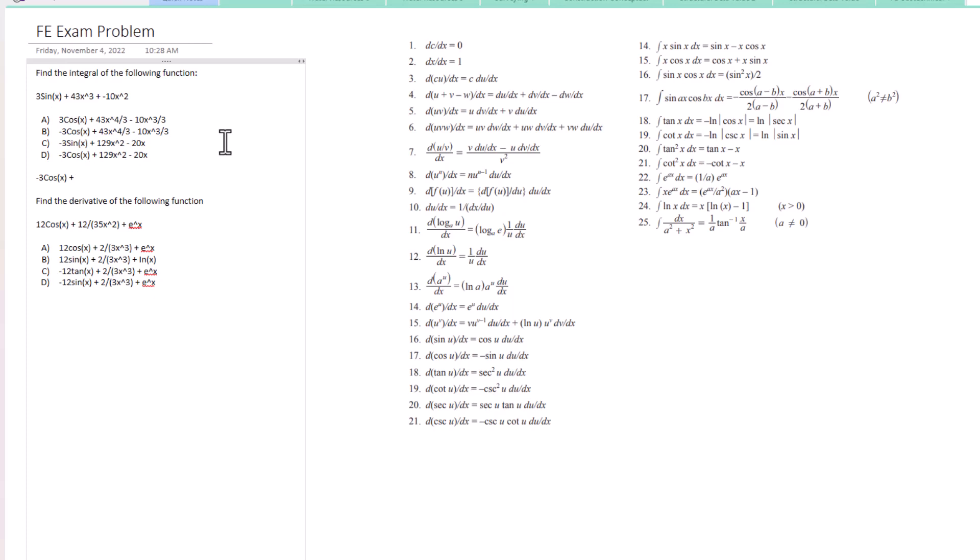For this next one, we're going to add one to the power then divide by the new power: 43/4 times x⁴, plus negative 10/3 times x³. It looks like our solution is answer B for the integral.